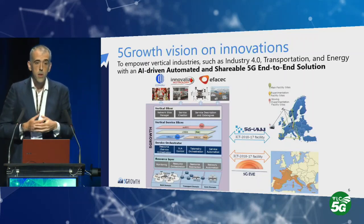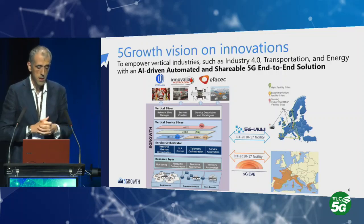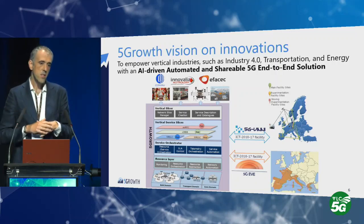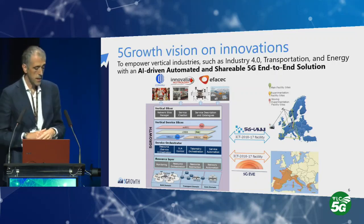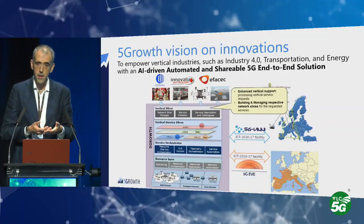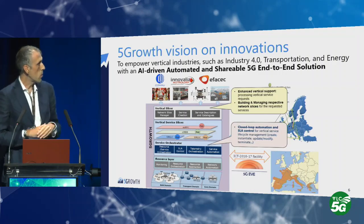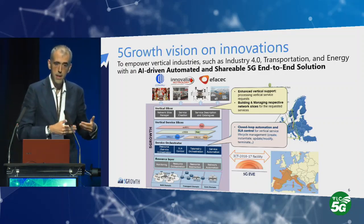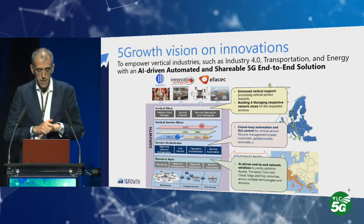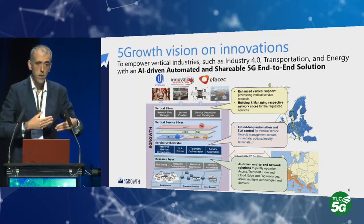On top of the baseline architecture we are working on innovations to empower vertical industries across Industry 4.0, transportation, and energy, bringing an AI-driven, scalable, and automated 5G solution. In the vertical slicer we want to enhance vertical support and provide tools for building and maintaining vertical slices. On the orchestration side we will work on closed-loop automation and better SLA support for vertical services. In the resource layer we will work on AI-driven end-to-end network solutions to optimize resource use and the concurrent use of different slices.